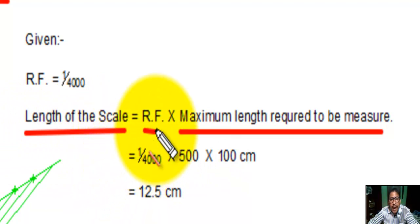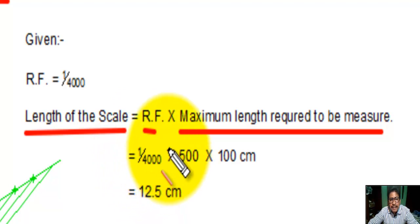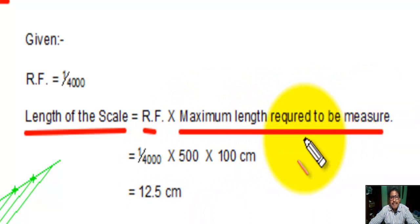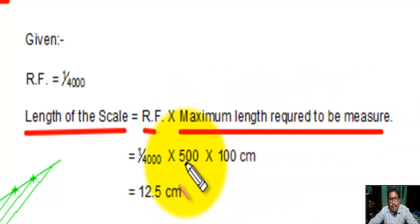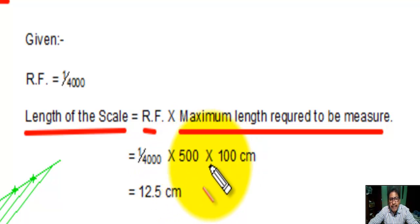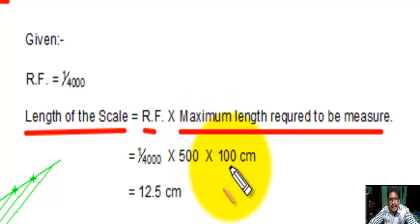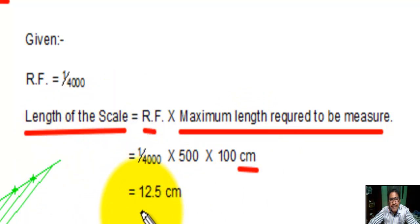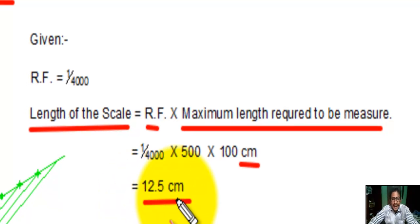We convert it into centimeters, so multiply by 100. Length of scale equals 1 by 4000 into 500 meters, converted to centimeters by multiplying by 100. So the length of the scale equals 12.5 centimeters.